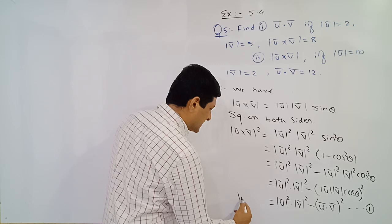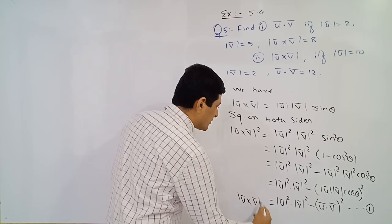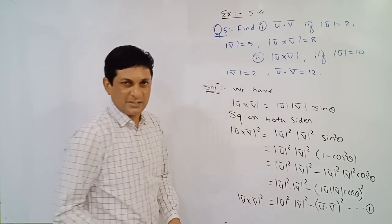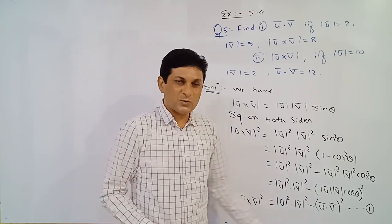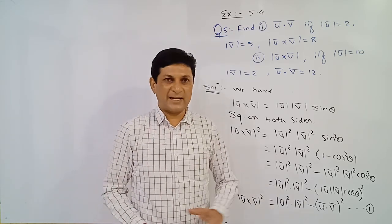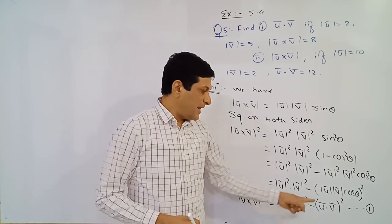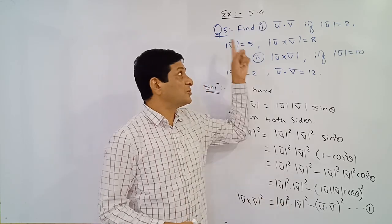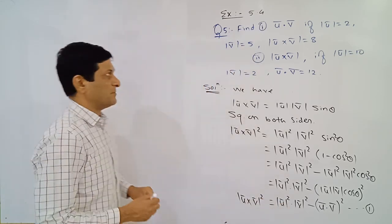Let us denote this equation as equation number one. The left-hand side is the square of magnitude of u-bar cross v-bar, and this result is called Lagrange identity: |u×v|² = |u|²|v|² − (u·v)².